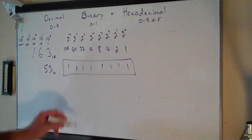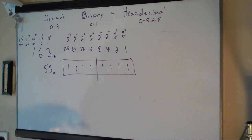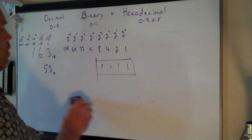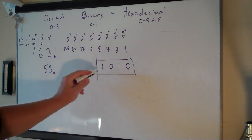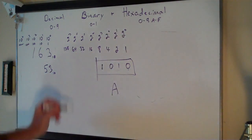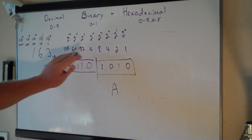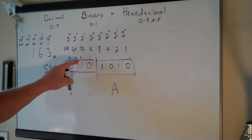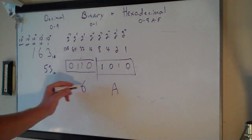For hexadecimal, what we do to translate is cut the byte in half and treat each 4-bit half — which is called a nibble — as its own thing. So if you look at the top nibble and it's 1010, that's 8 plus 2, which is 10, and in hexadecimal that's A. If the other nibble is 0110, you treat it as if it's its own 4-bit number: 4 plus 2 is 6. So if you treat each nibble separately as a 4-bit number, you can translate to hexadecimal.